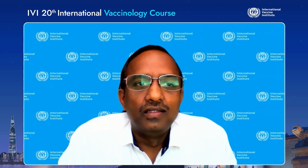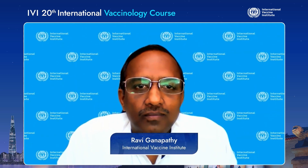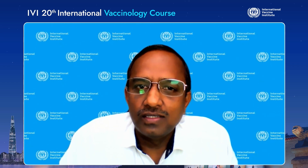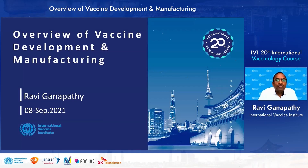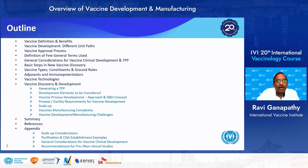Hello, good morning. This is Ravi Ganapati, heading the viral vaccine process development in IVI. I've been here about two and a half years and have about 25 to 28 years of experience in the vaccine industry. I'm going to talk about vaccine development and manufacturing — the development pathways in general — to give you an overall idea of how a vaccine is developed from initial stages until commercial launch. I've also attached an appendix at the end which will be shared as a PDF file so you can refer back after the talk.